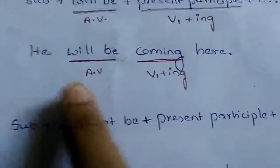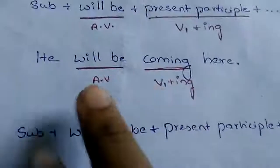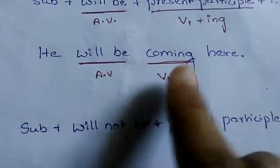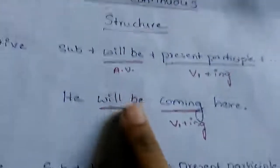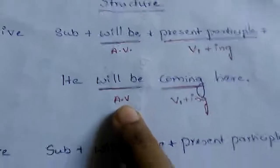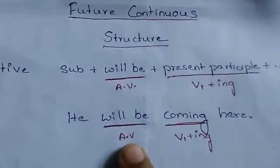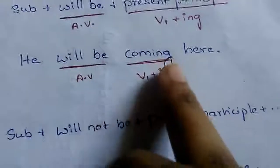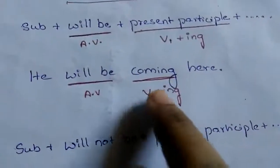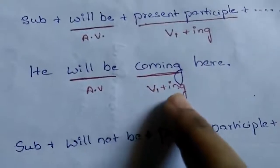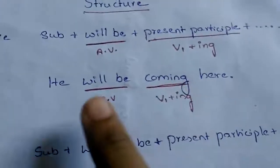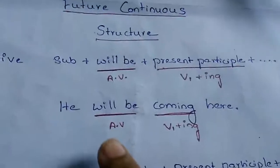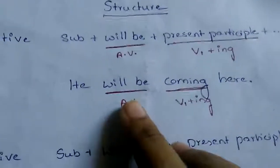In this example: 'He will be coming here.' Here, 'will be' is the helping verb used to construct the future continuous tense, and 'coming' is the main verb in V+ing form — that is, present participle form. We are using 'will be' as the helping verb and 'coming' as the main verb.